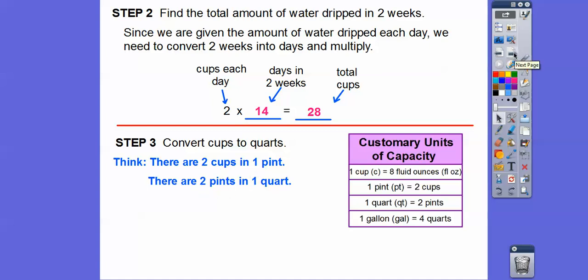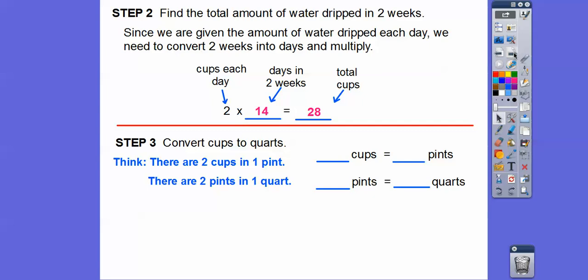We're going to divide. We start with 28 cups. Since there's two cups for each pint, when we go from a smaller unit to a larger unit, then we divide. So we're going to take 28 and divide that by two. 28 divided by two is 14, so there's 14 pints.